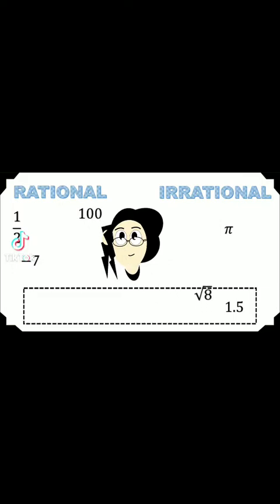Square root of 8 is irrational. If you simplify it, it will be equal to 2 square root of 2. And last number, 1.5 is rational.